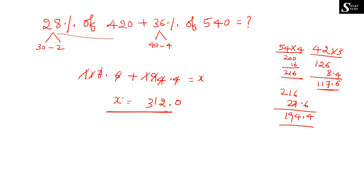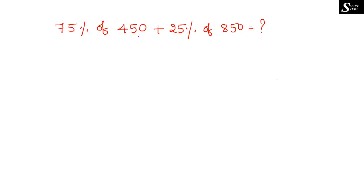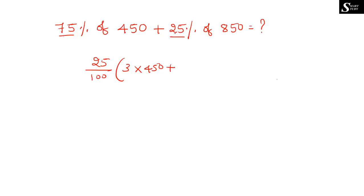I hope you understood. The next question is: 75% of 450 plus 25% of 850 is equal to what? Since 75% and 25% are both multiples of 25, we can take 25% as common. So this becomes 25% of (3 × 450 + 850) = 25% of (1350 + 850).